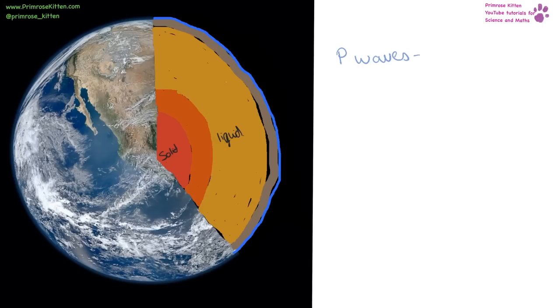When an earthquake occurs, we can use the resulting waves to give the information about the structure of the earth. P waves are primary waves. They are longitudinal. They can travel through solids and liquids. Which means they can travel all the way through the earth.